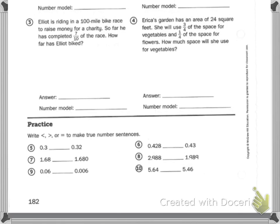Four, Erica's garden has an area of 24 square feet. She will use three-fourths of the space for vegetables and one-fourth of the space for flowers. How much space will she use for vegetables?